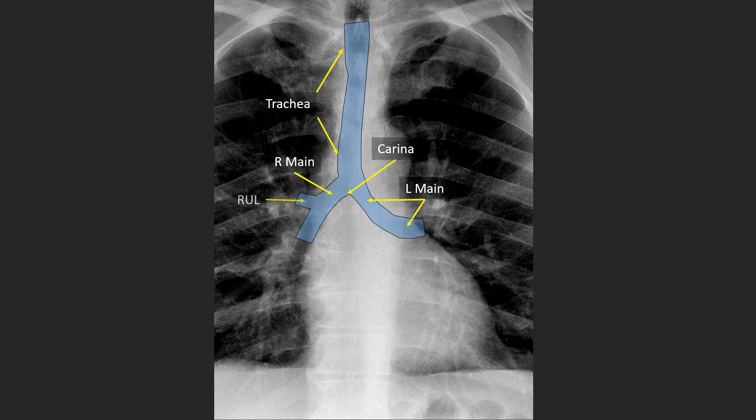The first branch coming off the right main stem airway is the right upper lobe bronchus, which is again very horizontally oriented and short. Beyond this branch point is the bronchus intermedius, which is a vertically oriented airway.